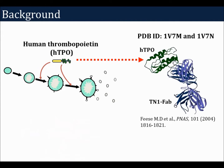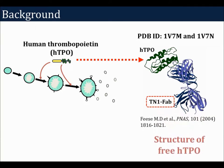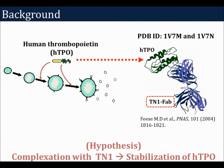In 2004, the tertiary structure of HTPO was determined as a complex with a FAB fragment derived from neutralizing IgG TN1. The tertiary structure of free HTPO has not yet been determined because of the difficulty in its crystallization. This difficulty may relate to the physicochemical properties of free HTPO. If HTPO is a highly flexible molecule, it may be structurally stabilized by complexation with TN1.